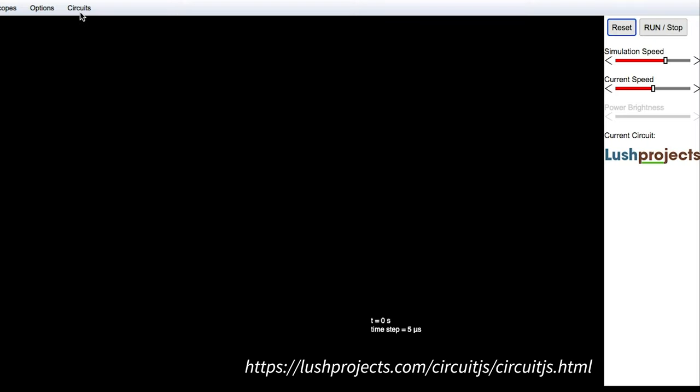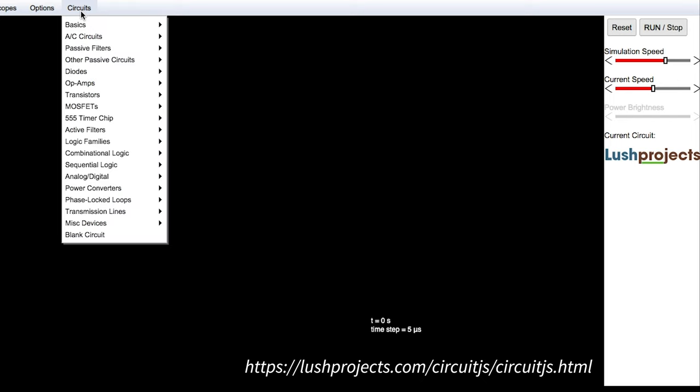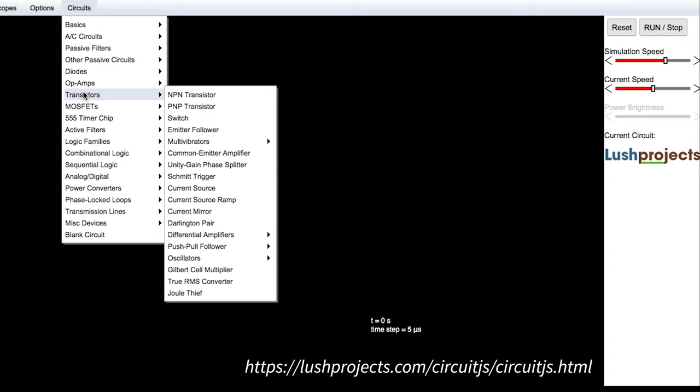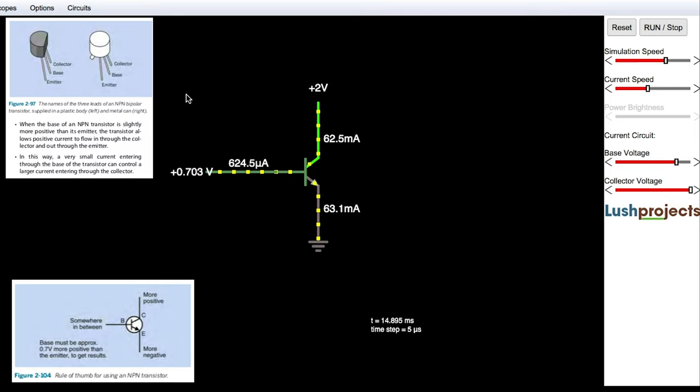To simulate transistor circuits using the LUSH simulations website, go to circuits, transistors, and let's start by picking up just a simple NPN transistor. You can see at the top is the collector. We put a plus 2 volt bias on it.